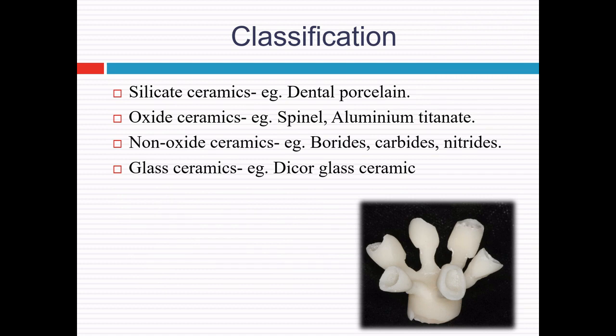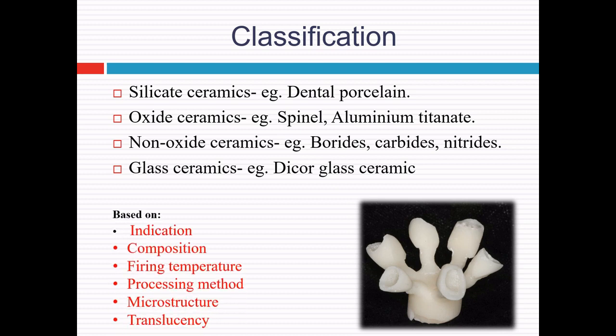Ceramics can be classified into four categories as per Anusavis: silicate ceramics characterized by an amorphous glass phase (example: dental porcelain); oxide ceramics containing a principal crystalline phase like alumina; non-oxide ceramics which have high processing temperatures, complex processing methods, and high opacity — so not used in dentistry; and glass ceramics containing a glass matrix phase and at least one crystal phase. There are also numerous other classifications based on indication, composition, firing temperature, processing method, microstructure, and translucency.